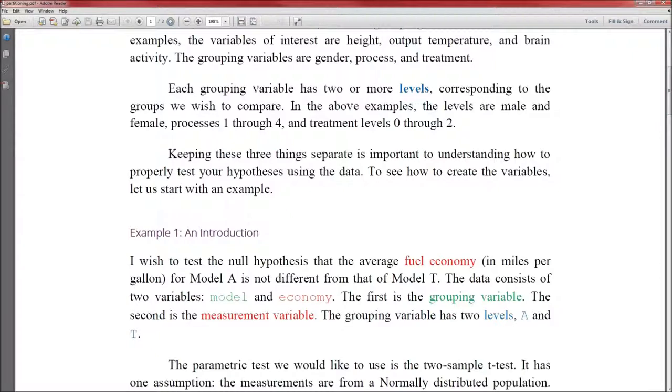For each grouping variable, there are two or more levels, otherwise it would all be the same value. And those levels correspond to the groups we wish to compare. In the above examples, the levels are male and female, processes 1 through 4, and treatment levels 0 through 2. Keeping these three things separate is important to understanding how to properly test your hypothesis using the data.